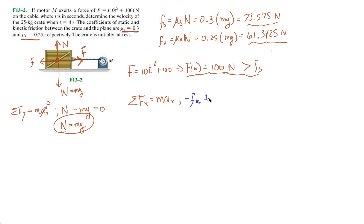So we do forces in the x direction. We have minus fk. I said, I just left that as f over here, because we didn't know which friction force we're going to use, but we know we have to use a kinetic one. So minus fk plus big F equals mass times acceleration in the x. And we don't know what that is. We don't know the acceleration in the x direction. We're trying to determine the velocity of the crate at t equals 4. So let's plug in some numbers here. So minus 61.3125 plus the function f, which is 10t squared plus 100 equals 25ax.